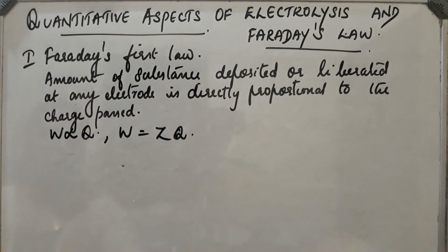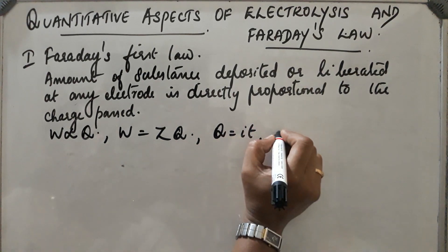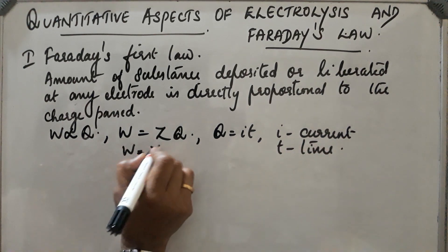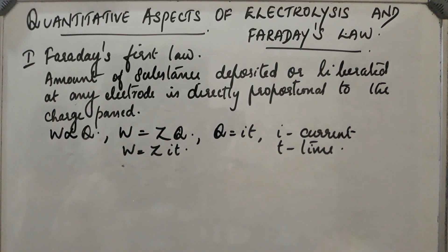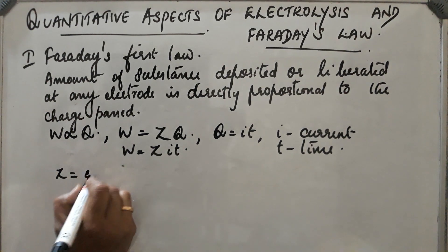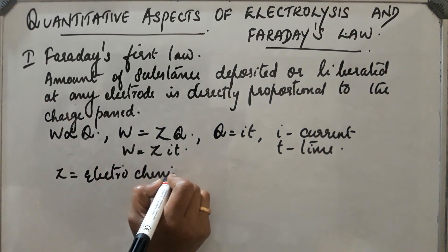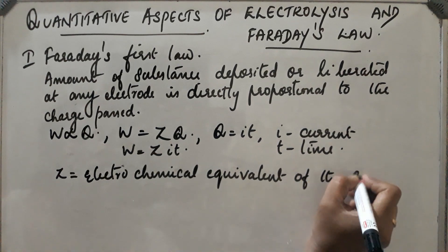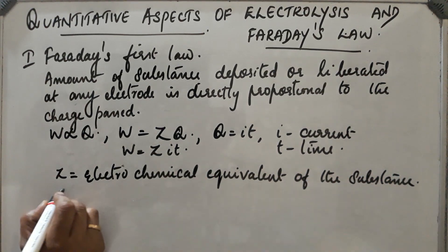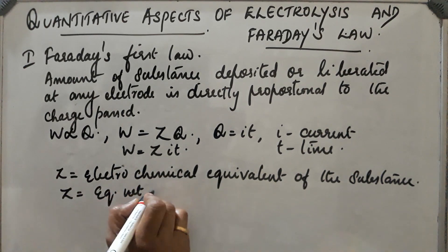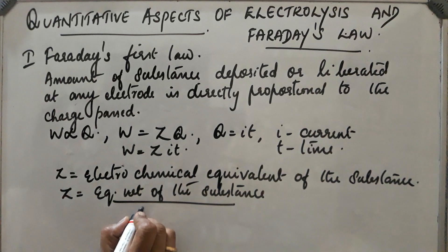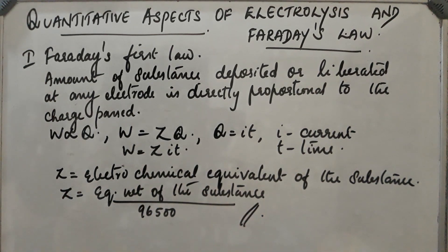The proportionality constant is Z. Also, Q is equal to I×T, where I is the current and T is the time. So, W is equal to Z×I×T. Here, Z is the electrochemical equivalent of the substance deposited. Z is equal to the equivalent weight of the substance deposited divided by 96500, which is a constant.